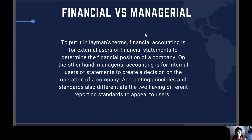So what it's saying here is that financial accounting more on focuses on the external users of our financial statements. Managerial accounting, on the other hand, is more for the management of the company or business — it's more internal. The reports made under managerial accounting are used by management to forecast and support their decisions on what they need to do in the future. Accounting principles and standards also change depending on whether you're using financial or managerial accounting.